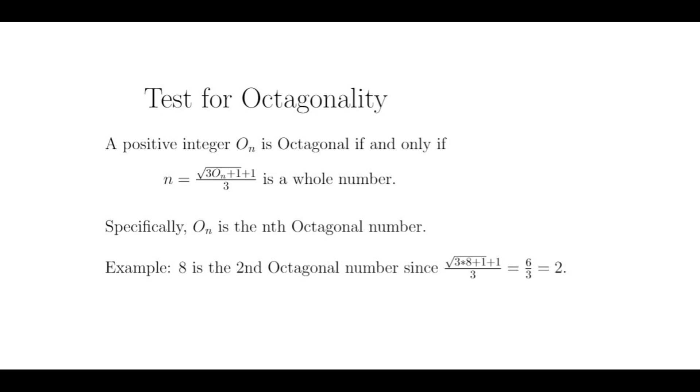For example, to test whether 8 is octagonal, I plug 8 into the formula, and I get root 3 times 8 plus 1, which is root 25, which is 5. Then I'll add 1, which makes 6, and divide the whole thing by 3, which gives me 2. Therefore, 8 is indeed octagonal, and in fact, it is the second octagonal number, O sub 2.